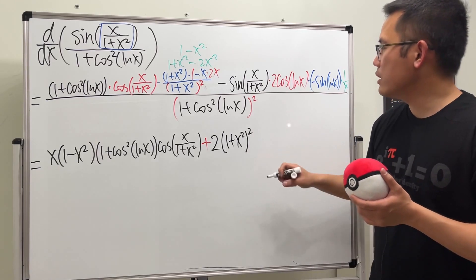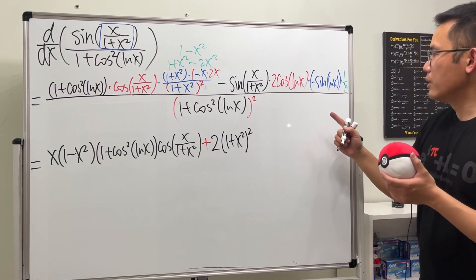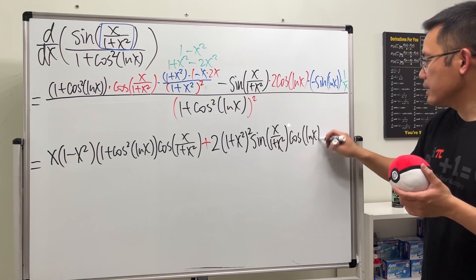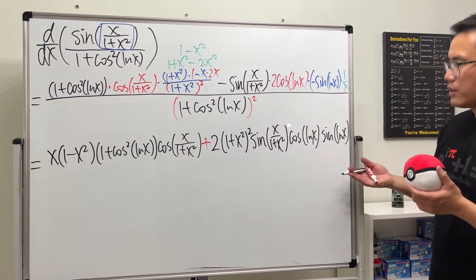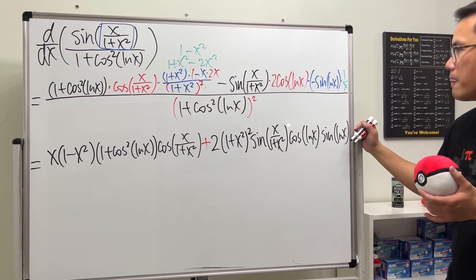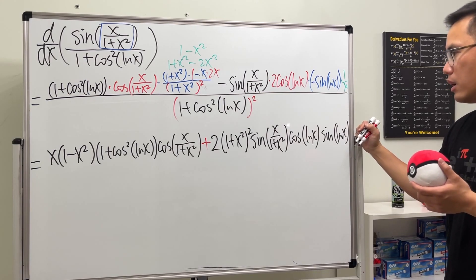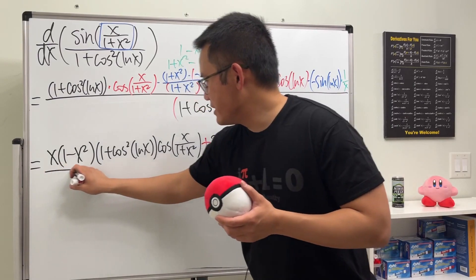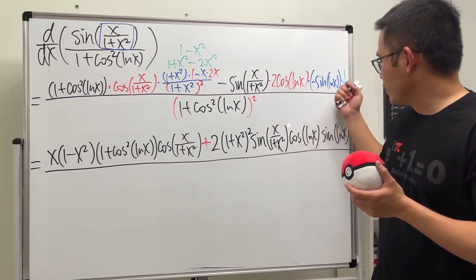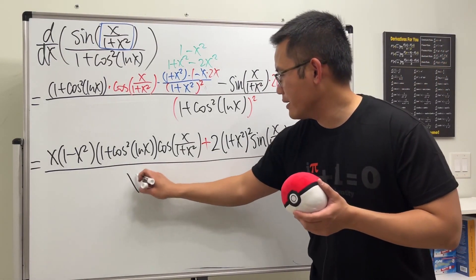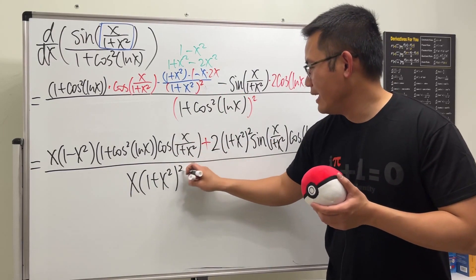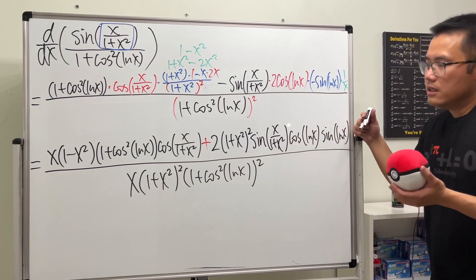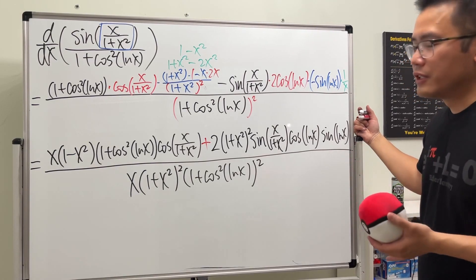Remembering we multiplied top and bottom by that factor, we have (1 + x²)² in the denominator. Then we write down sine of (x / (1 + x²)), cosine(ln x), and sine(ln x). The final denominator is (1 + cosine²(ln x))². Derivatives won't surprise you — you can always differentiate anything.